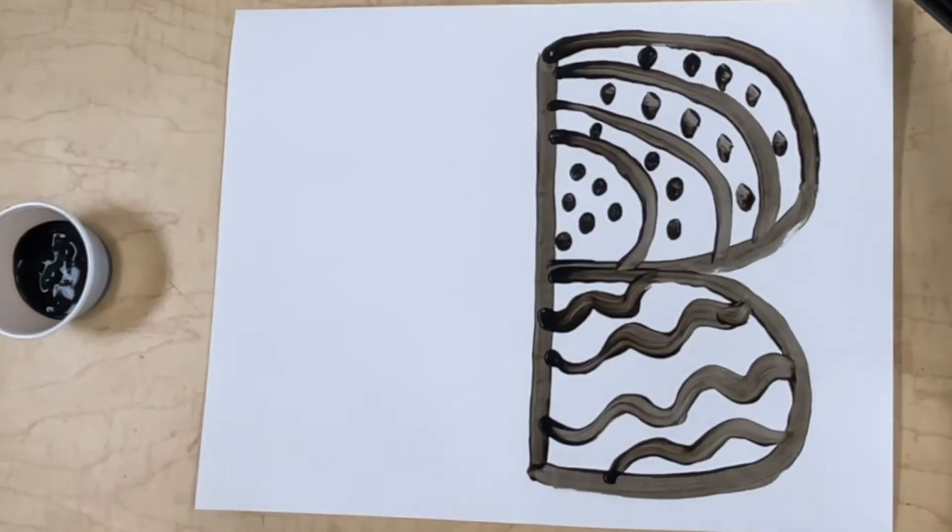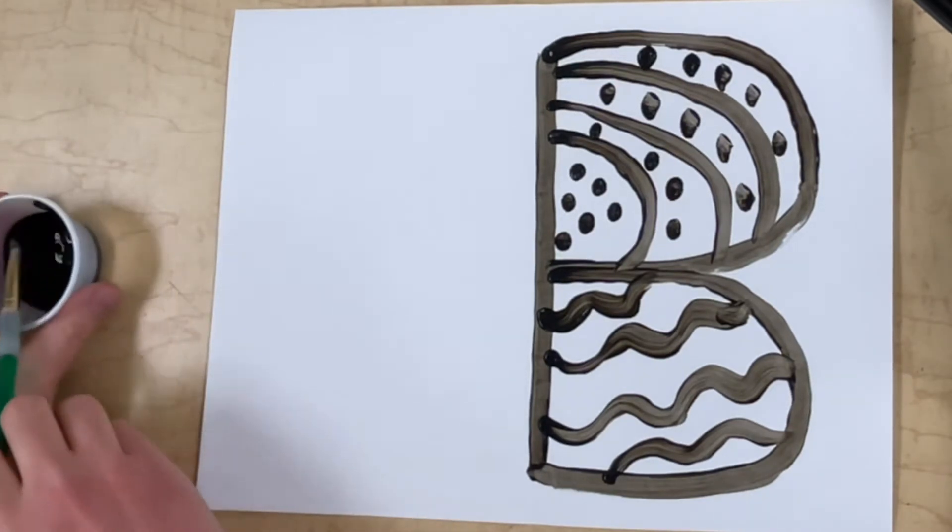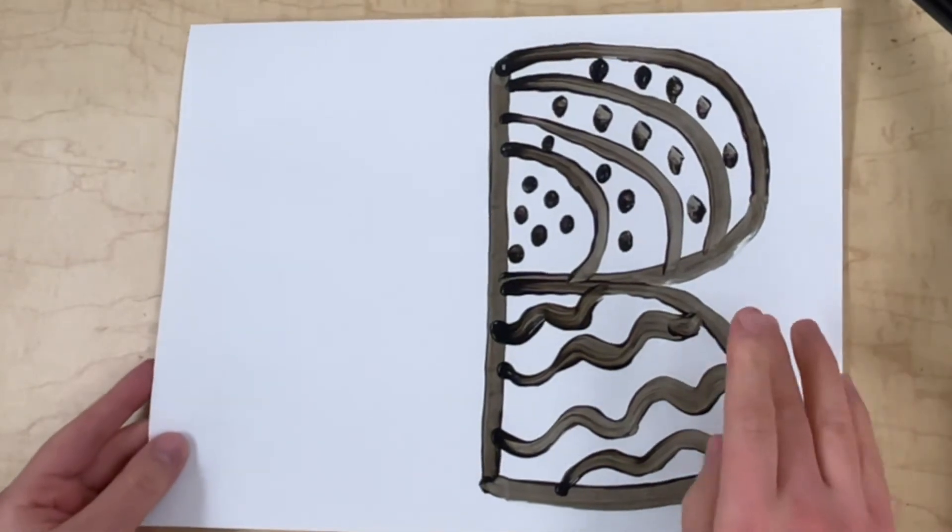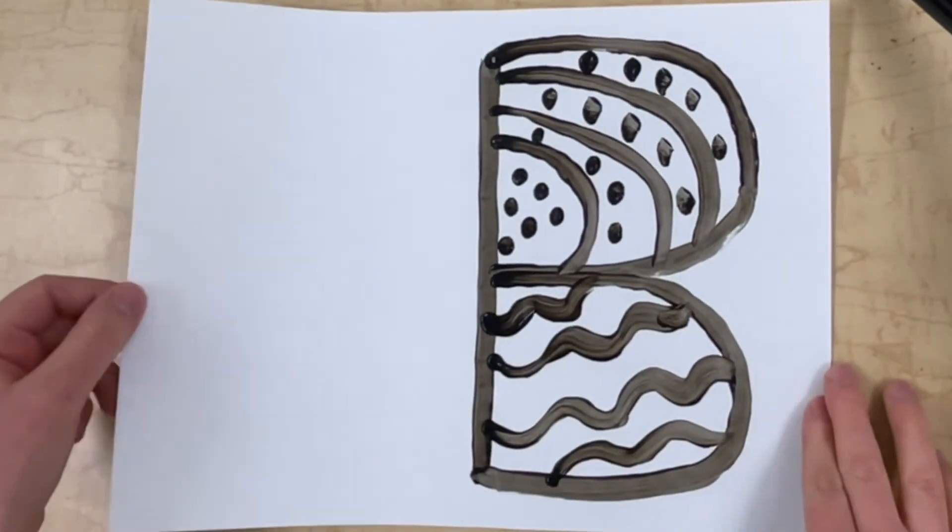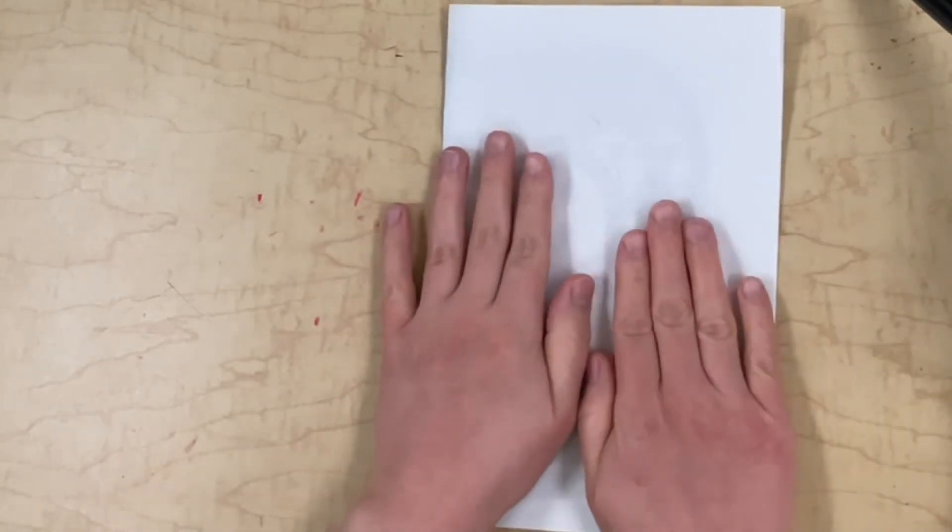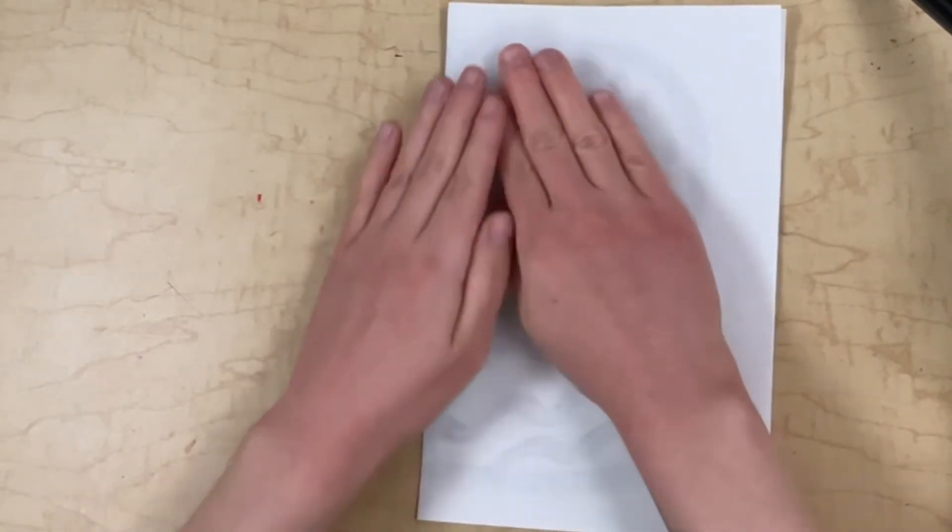All right, now it's time to make your monoprint. So you can set aside your paintbrush. And now you're going to take the side of the paper that you didn't paint on and you're going to fold it over the side you did paint on, like you're closing a book. Now we're making a monoprint.